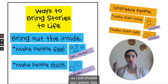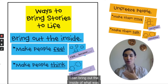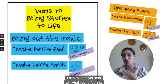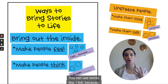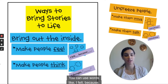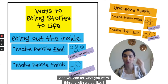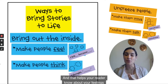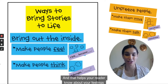So I just showed you, writers, how I can bring out the inside of what was happening to me in my story. I can tell — and you can tell — what you're feeling. You can use words like 'I felt because,' and you can tell what you were thinking with words like 'I thought' or 'I was thinking.' That helps your reader know about your feelings in the story.